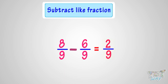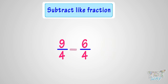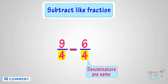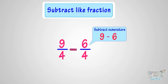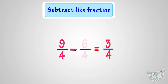Here we have another example. We have to subtract 6/4 from 9/4. These are like fractions, as the denominators of both fractions are the same. We just have to subtract the numerators in order to subtract the fractions. Subtracting the numerators, that is subtracting 6 from 9, we get 3. So our answer is 3/4. 3/4 is the difference between the two fractions 9/4 and 6/4.